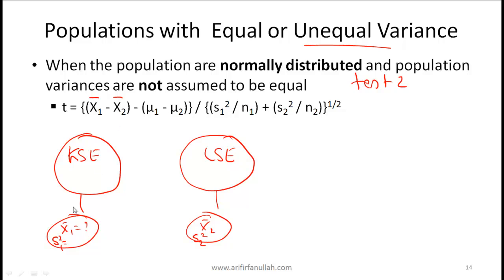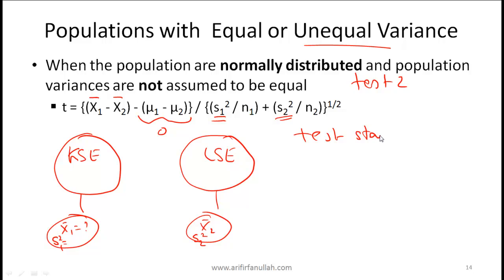The test statistic formula is similar: the numerator is still (x1-bar minus x2-bar) minus (mu1 minus mu2), which is zero under the null. The key difference is the denominator — we explicitly use s1-squared and s2-squared from their respective samples rather than a pooled variance. As before, you compare the resulting t-statistic with critical values.